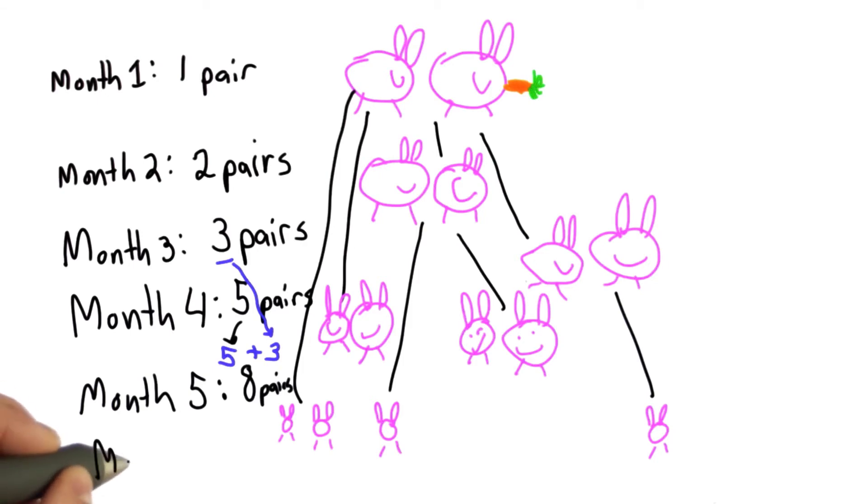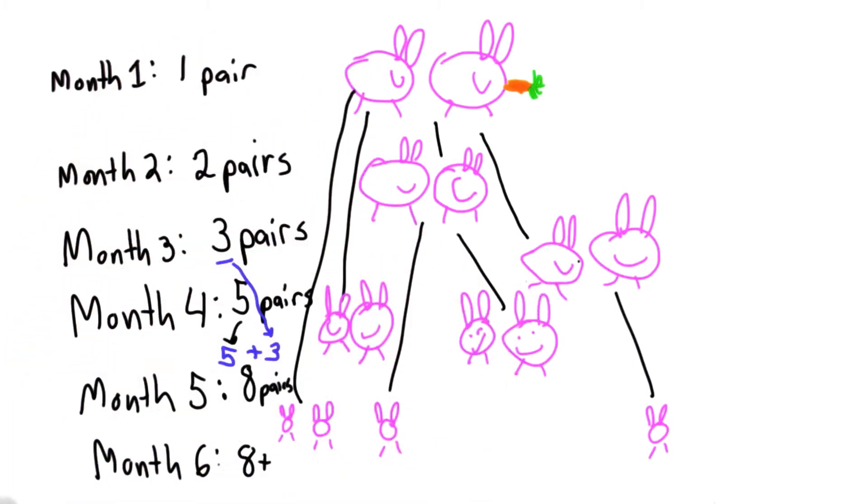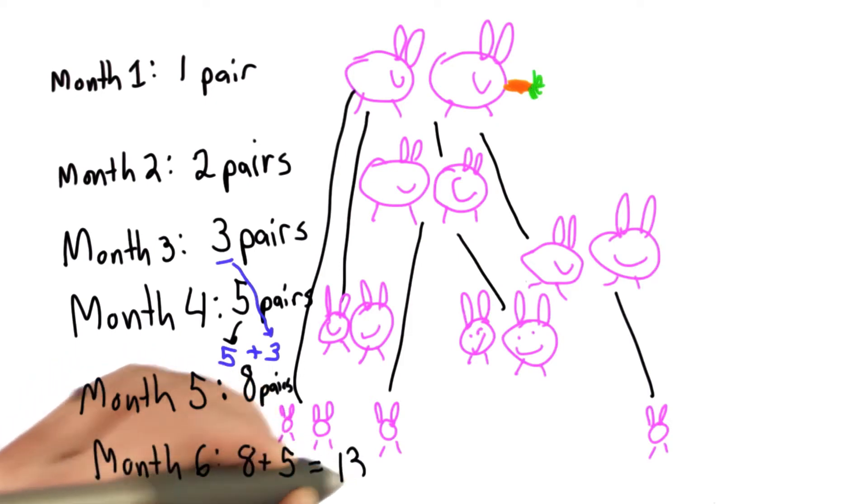This keeps going. In month six, we're going to have the eight rabbits that we had at the end of month five, plus the five mature pairs will each reproduce. So we'll have five new pairs, and that will give us 13 pairs of rabbits.